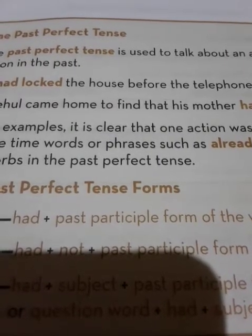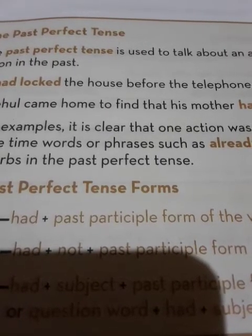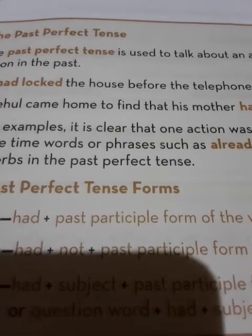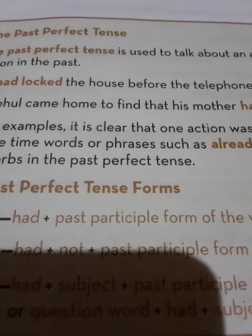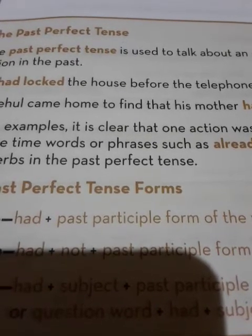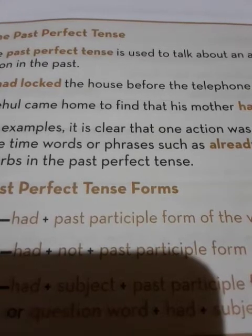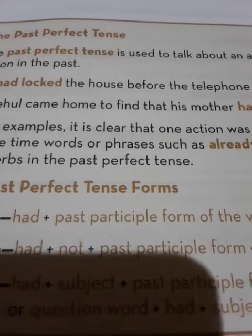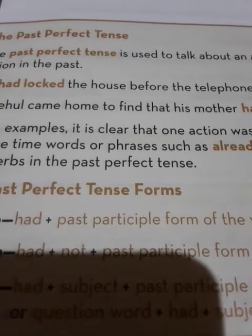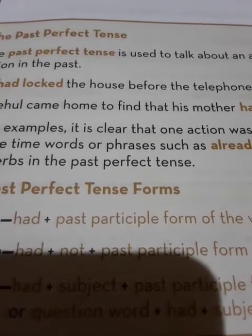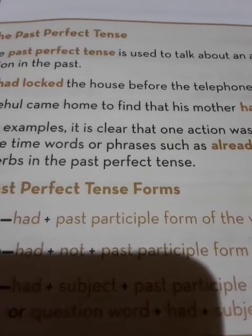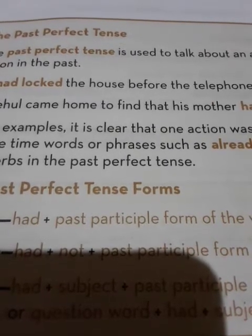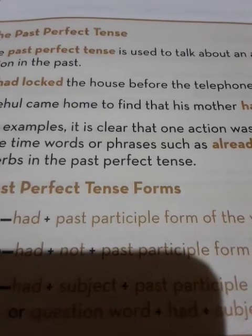Now let me tell you where we use past perfect tense. Number 1: to describe an action completed before a definite point in the past. For example, I had finished my dinner by 8 o'clock. This sentence shows that my dinner had finished at a definite point of time in the past.